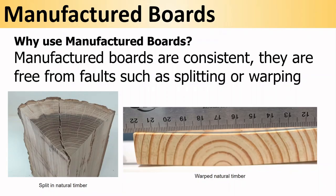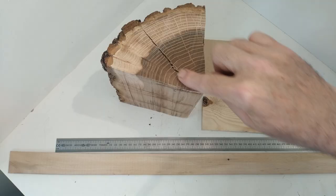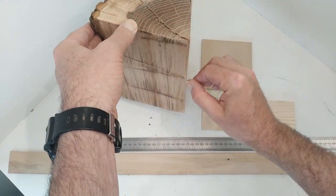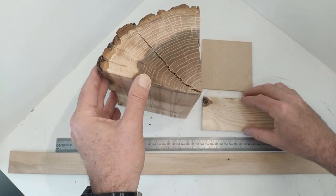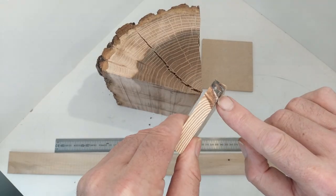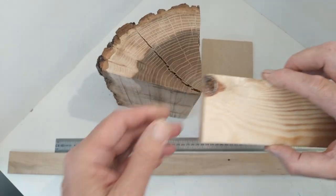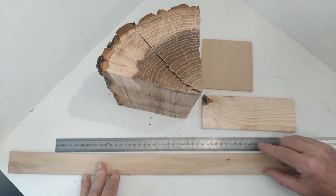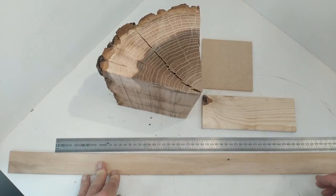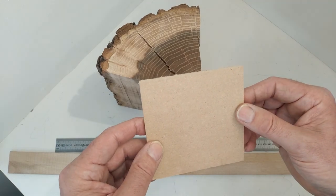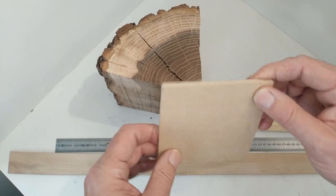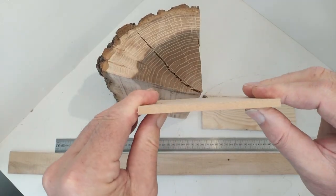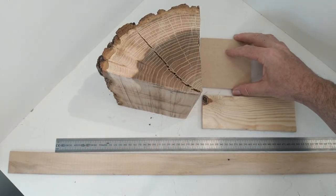Manufactured boards are also consistent, meaning they are free from faults such as splitting or warping. In natural timber you can see splits in the grain, knots where branches grew out of the tree, and bowing or twisting — that is warping. In contrast, manufactured board is consistent: it doesn't have the grain, it has a smooth finish, and it doesn't twist or warp.